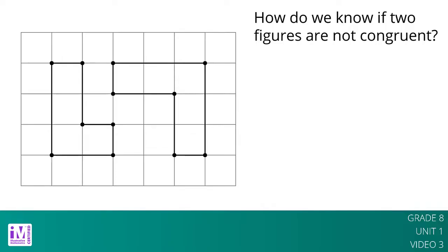For example, the figure on the left has side lengths 3, 2, 1, 1, 2, 1. The figure on the right has side lengths 3, 3, 1, 2, 2, 1.